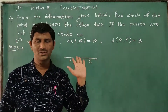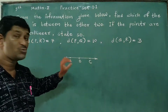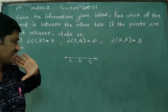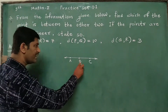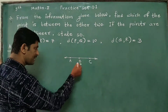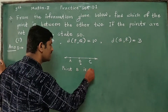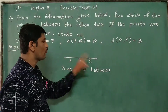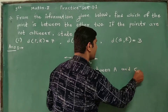If the points A, B, C are collinear, then Point B is between Point A and Point C.